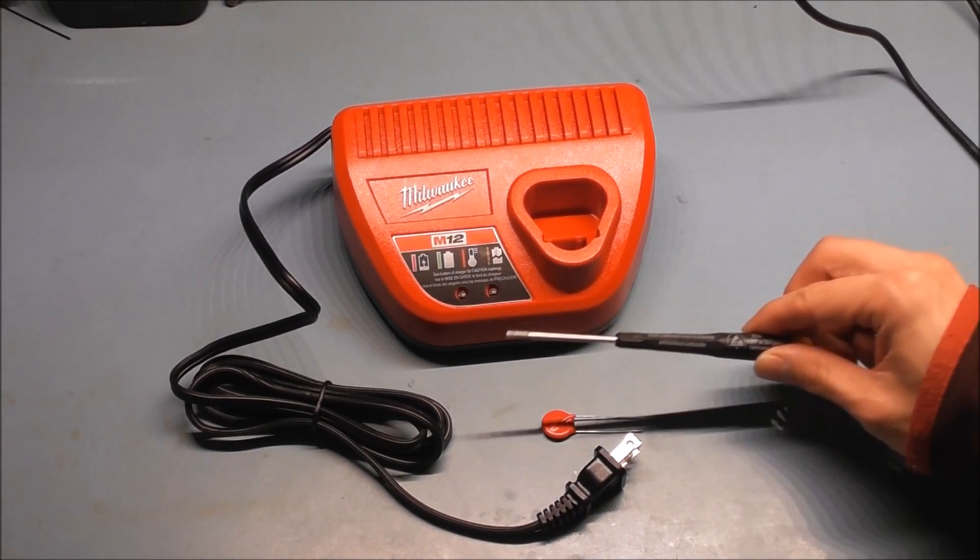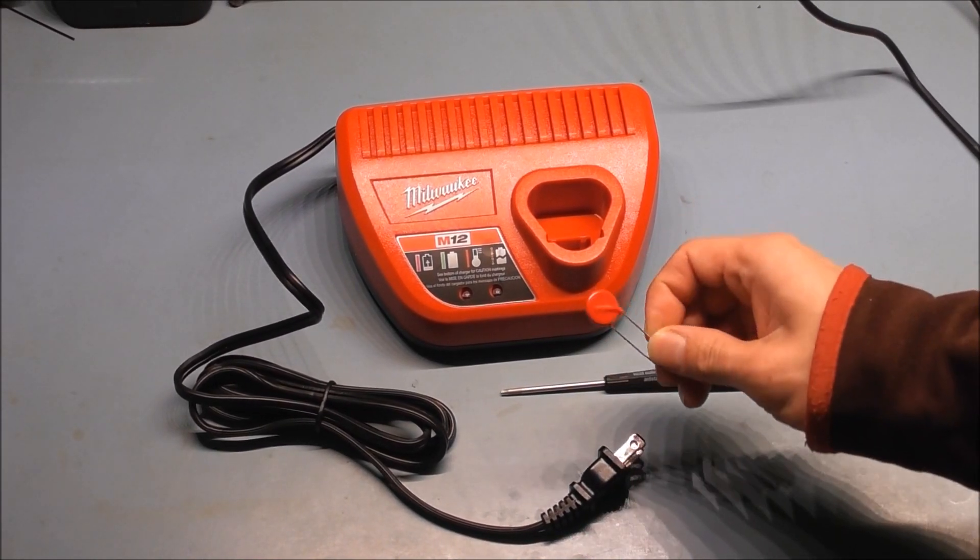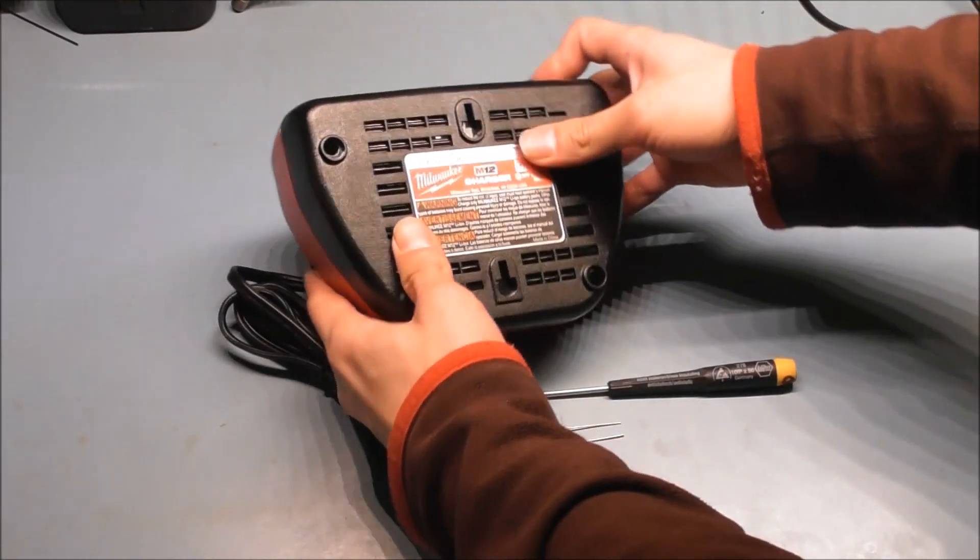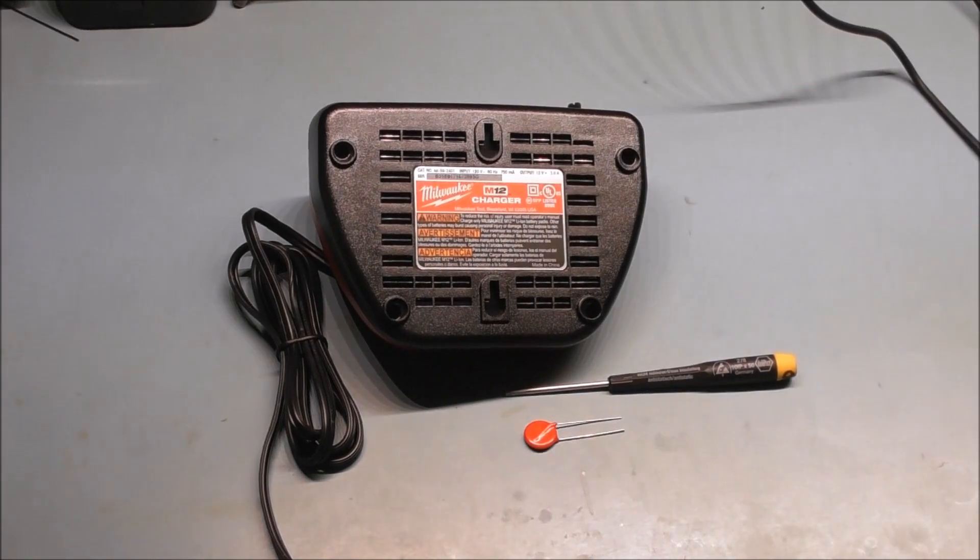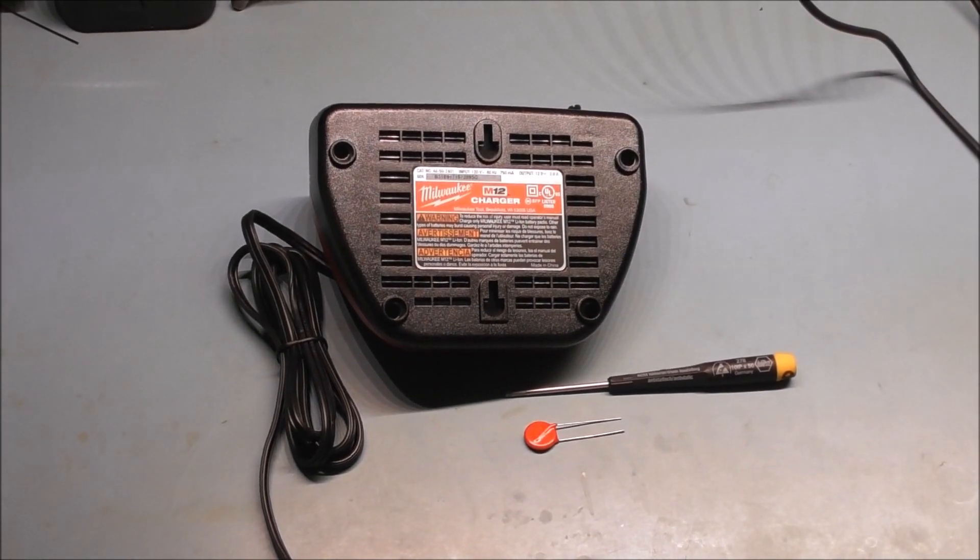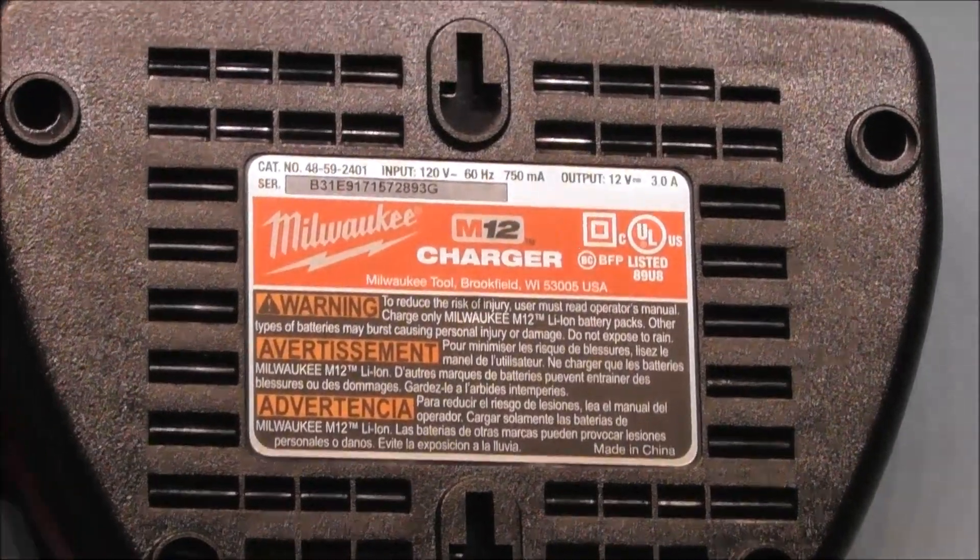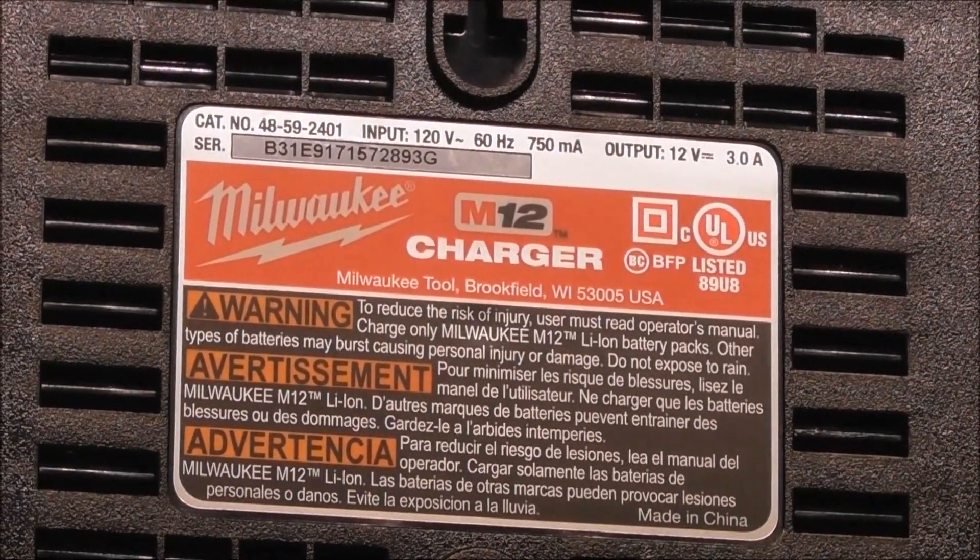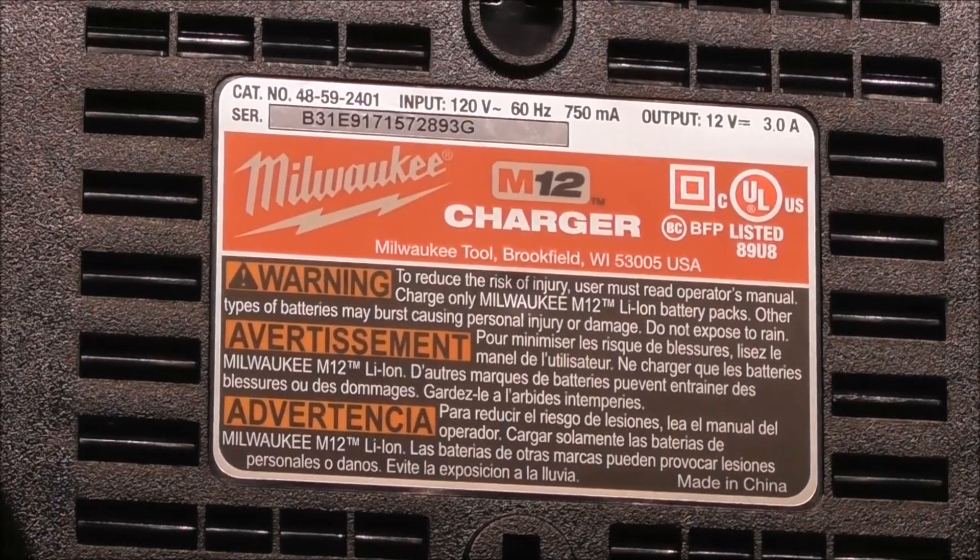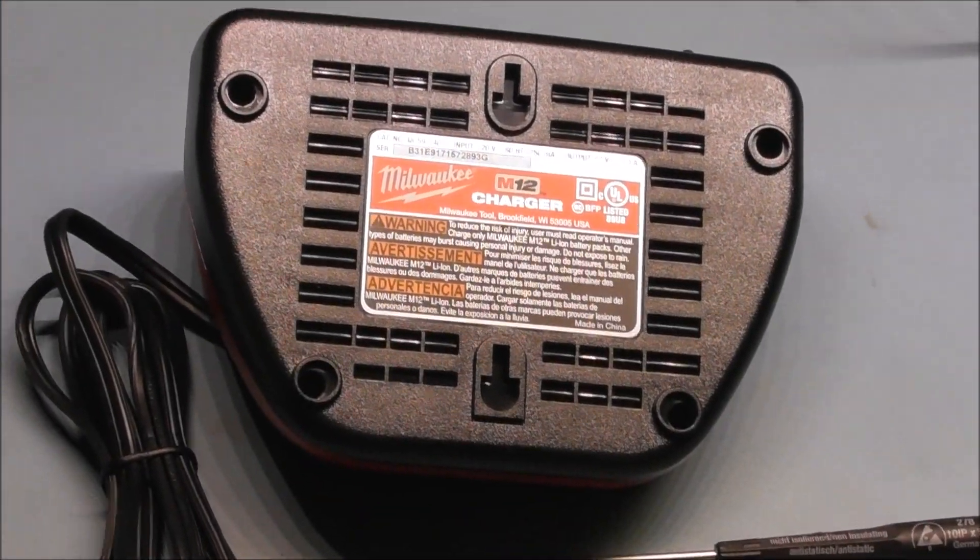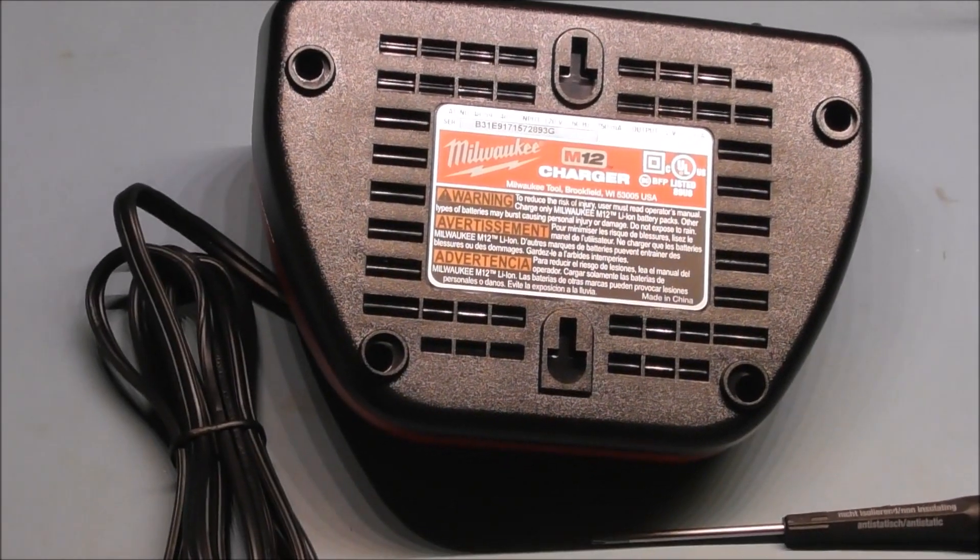So all we'll need is a screwdriver and we need a replacement MOV. Alright, so this is the back and it shows the model number that I have. As you can see, for this particular model it's a 120 volt input, and we'll open it up and make a quick modification and have this run on 240 volts.